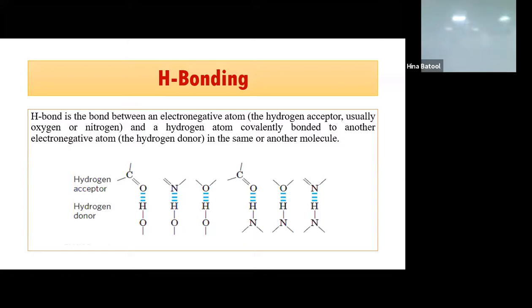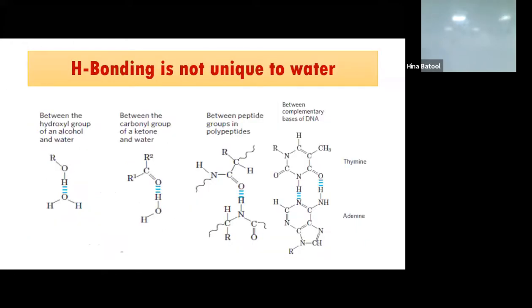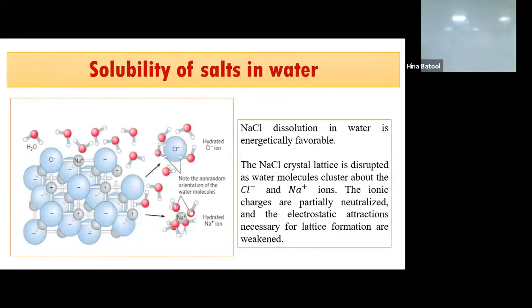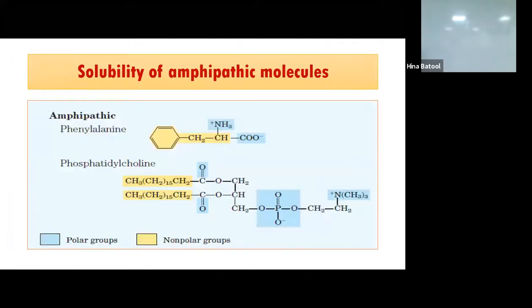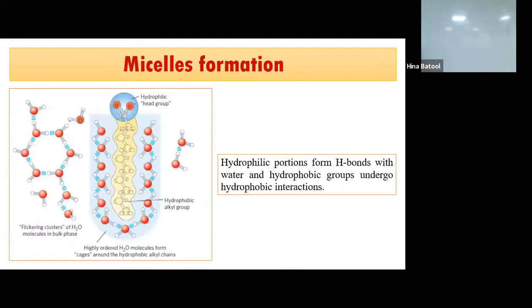We had also clarified that hydrogen bonding is unique in water. The three-dimensional structures that maintain hydrogen bonding are very important. We had discussed that hydrogen bonding is directional in nature and weak compared to covalent bonding. When we add an ionic, polar, non-polar, or amphipathic molecule in water, what dissolves and what is the behavior of water?